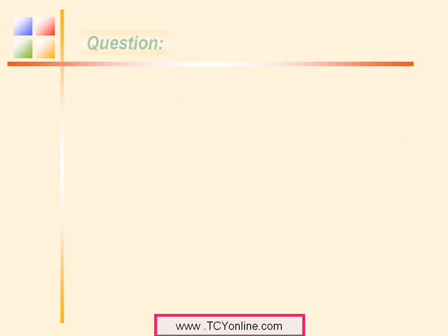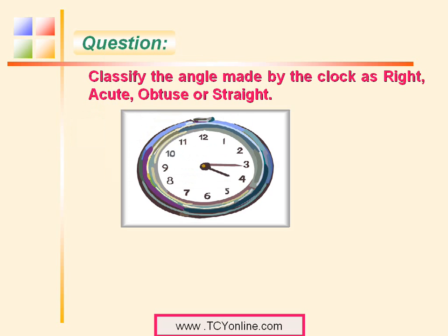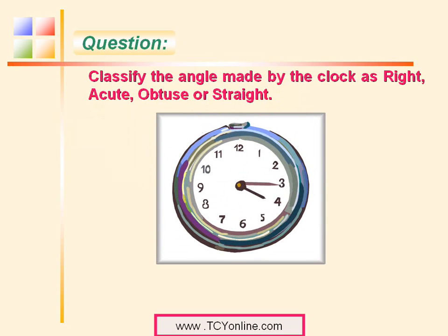Now let's try some questions. Classify the angle made by the clock as right, acute, obtuse, or straight. The clock shows the time of 4:15. Look at the hour hand and the minute hand — it appears to have a measure less than 90 degrees. So this angle is simply an acute angle.